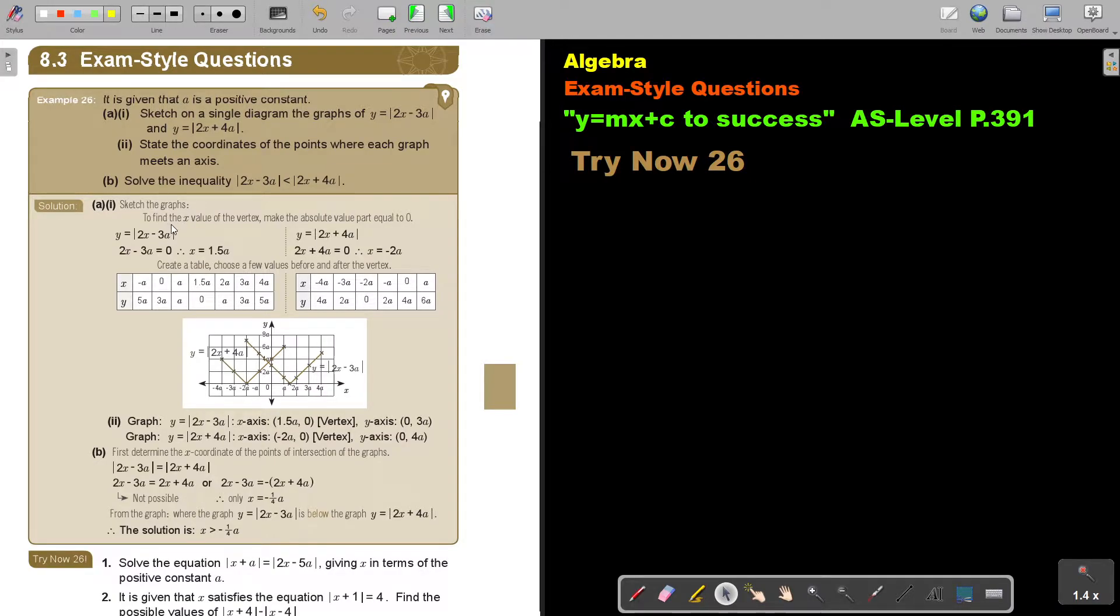So sketch the graphs. To find the x value of the vertex, make the absolute value part equal to zero. So let's first find the vertex of both graphs. We take that inside and put it equal to zero, and then we get x is 1.5a. If you take this 1.5 and substitute it in there, so if you have 2x minus 3a, I forgot to replace x. So 2 times 1.5a minus 3a, and then I will get 3a minus 3a. So the value of Y will be zero. So the vertex will be 1.5a and zero.